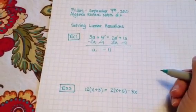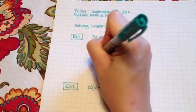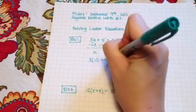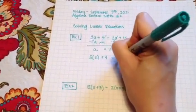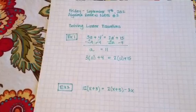Now in class I asked you guys to check your work by plugging the answer back in. So if I say 3 times 11 plus 4 on this side and on the other side I say 2 times 11 plus 15, they should come out to the same answer.